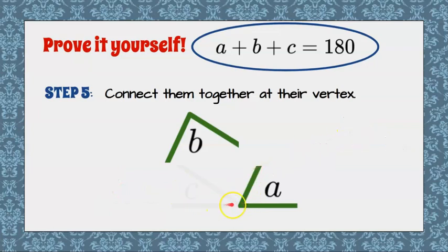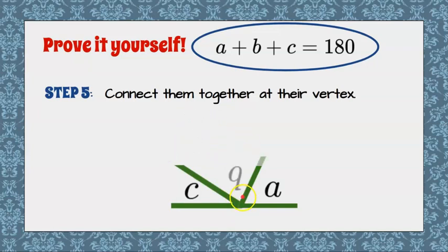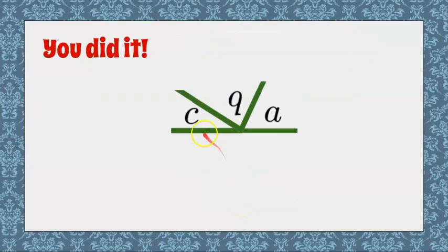We're going to bring C down and connect the vertexes together, vertices, and we're going to flip B around and it's going to fit perfectly in between. And there you did it. You have proven why the three angles of any triangle equal 180 degrees.